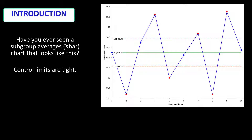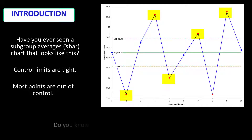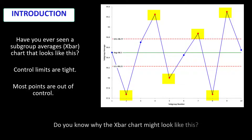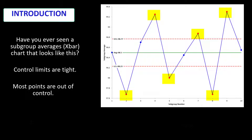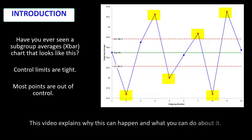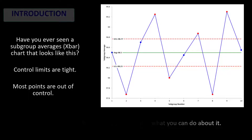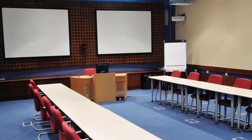Have you ever seen a subgroup averages chart that looks like this? You collect your data, plot it, do your calculations, but the control limits are very tight and most of the points are out of control. Do you know why the X-bar chart might look like this? It has to do with balancing the between and within subgroup variation. This video is going to explain why this happens naturally and what you can do about it to still monitor your process.